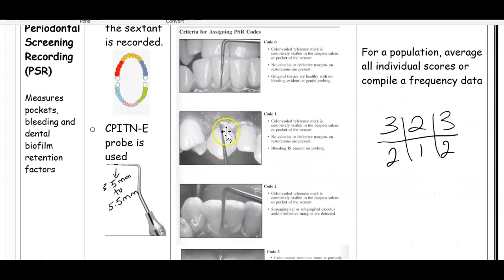Code one - the black band is exposed. There's no calculus detected. The reason they have a ball tip at the end of the probe is for calculus detection. You're able to better detect calculus with a ball tip. When you probe, you notice there's no calculus but there is bleeding. In code zero there's no bleeding, but here there is bleeding. You can see a little bit of bleeding on probing seeping through.